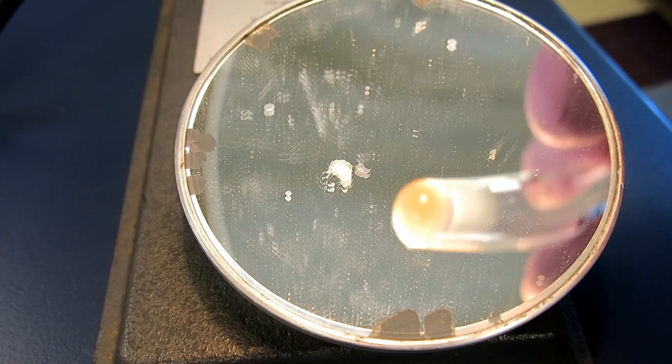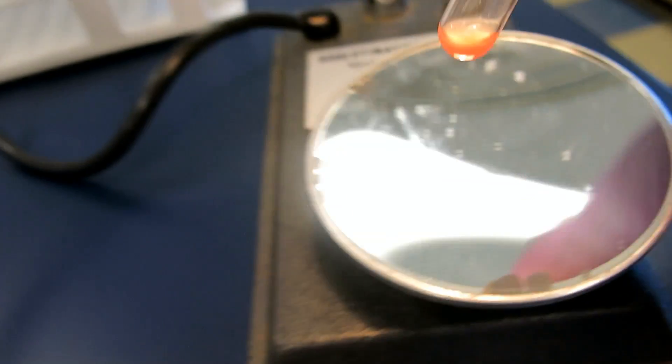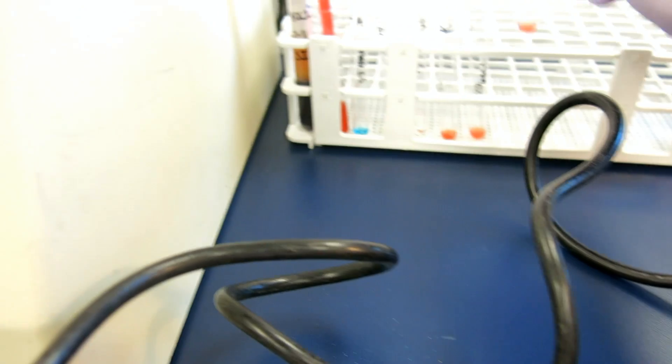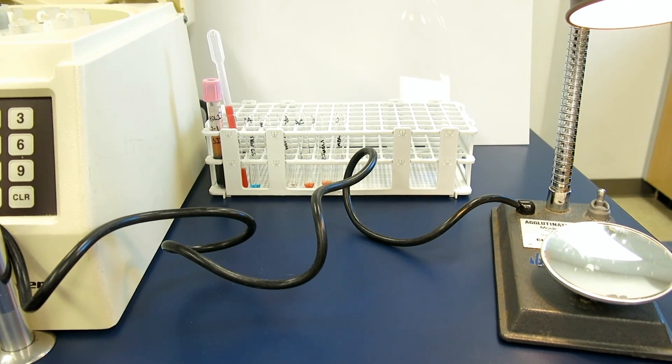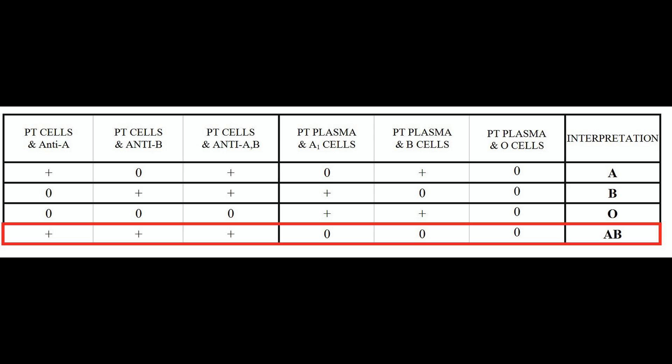All results with forward typing were positive. This confirms that my patient is AB blood type. Refer to this chart to determine what blood type your patient has.